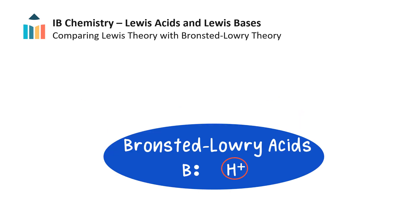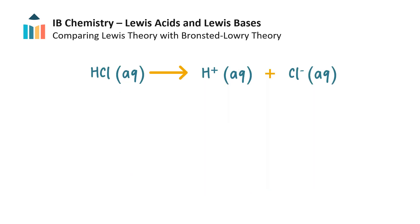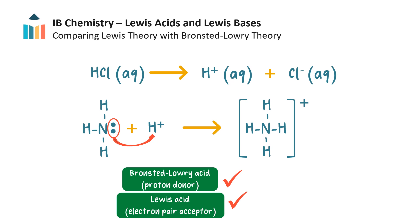Since Bronsted-Lowry acids donate a proton to a species with an electron pair, Bronsted-Lowry acids are also Lewis acids, since the hydrogen ion from the acid can accept the electron pair. For example, hydrochloric acid, being a strong acid, dissociates fully in water into hydrogen ions and chloride ions. When hydrochloric acid reacts with ammonia, the proton from the acid is donated to ammonia, so hydrochloric acid acts as a Bronsted-Lowry acid. It also acts as a Lewis acid, as the proton accepts and shares a pair of electrons from ammonia.